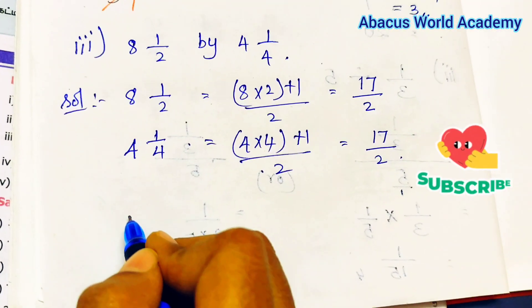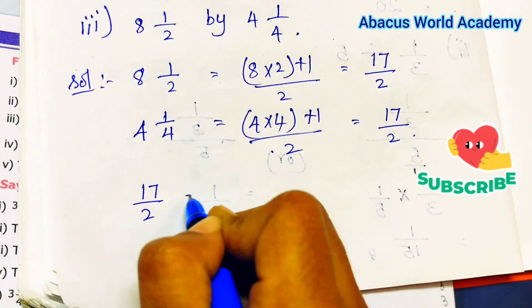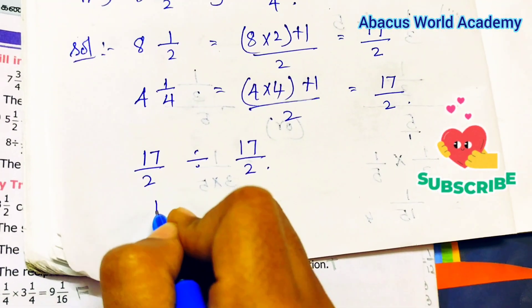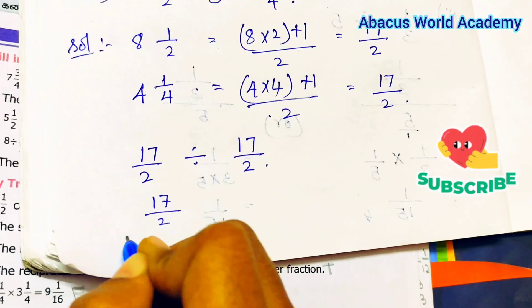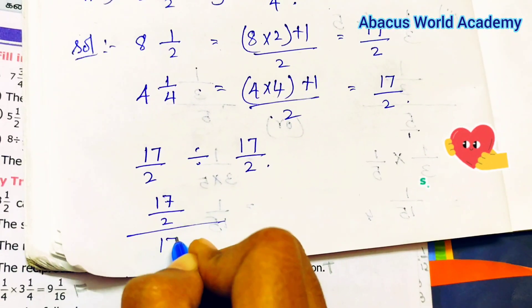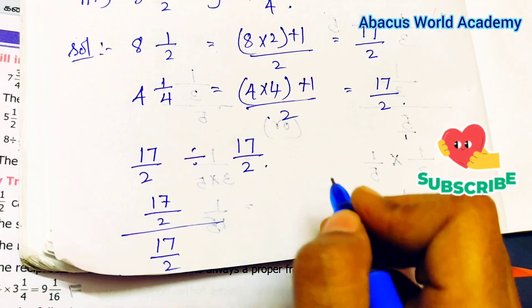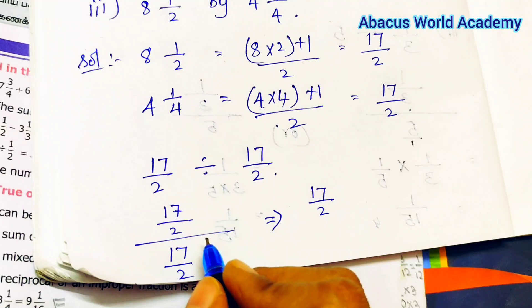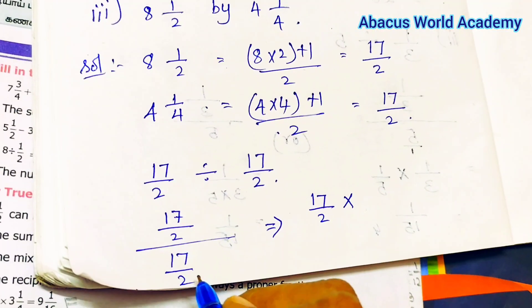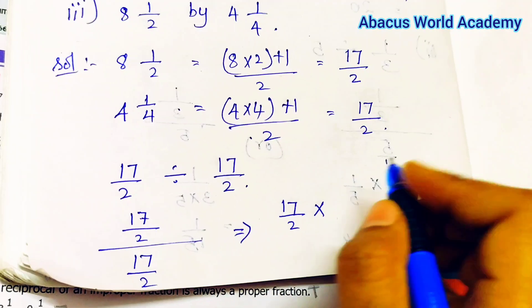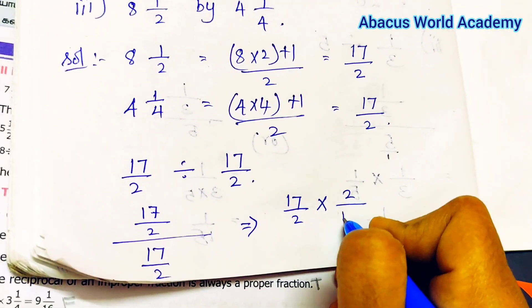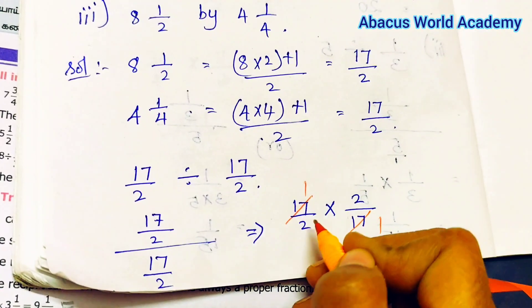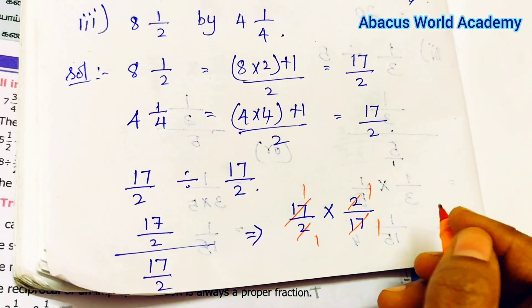Okay, now we will divide by 17 by 2, 17 by 2 divided by 17 by 2 is equal to 17 by 2. In the division, what change is equal to 2. So here we will divide by 17 by 2, 17 by 2 is equal to 17.